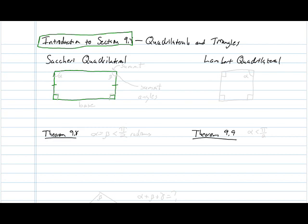So, the Saccheri quadrilateral is a quadrilateral in which you have one side on the bottom, this is the base, and you have two sides going up from that base that have the same length, and they form right angles with the base. And you have a side on the top called the summit.